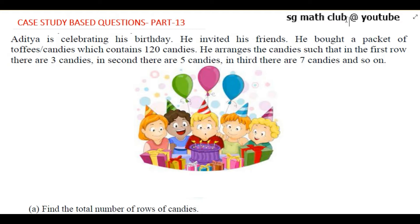Hello everyone. In today's video we will be doing a case study based question from the chapter Arithmetic Progression for class 10. The question goes like this: Aditya is celebrating his birthday and invited his friends. He bought a packet of toffees or candies which contain 120 candies. He arranges the candy such that in the first row there are three candies.